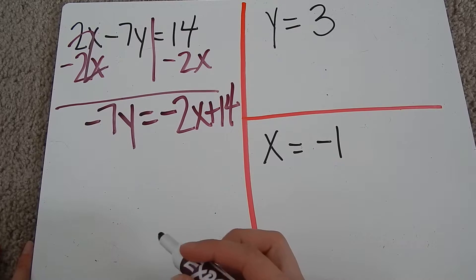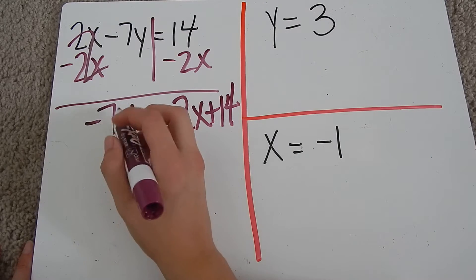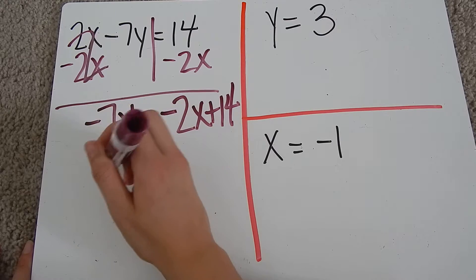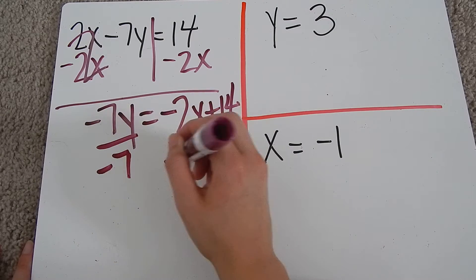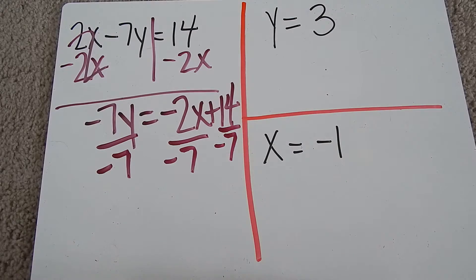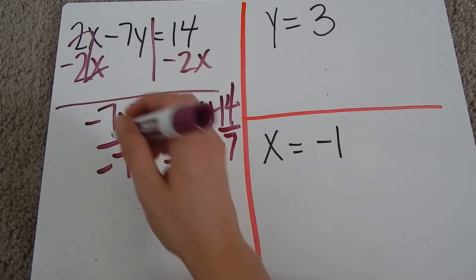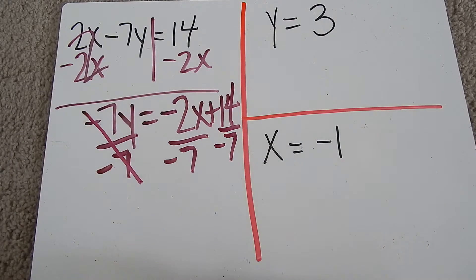Then to get y completely alone, I'm going to divide everything by whatever is attached to y, which is negative 7. We have to divide everything to make sure we don't change the equation. So my negative 7s here are going to cancel out.